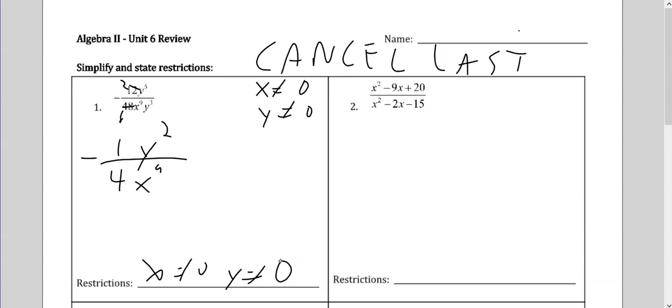For number two, we have to factor the top and bottom first. These factorings in this unit are not hard because it's not the goal of this unit — it's just a tool. They're all pretty simple ones. On number two, I need two numbers that multiply to give me 20 that are going to add to 9. Well, that's 4 and 5.